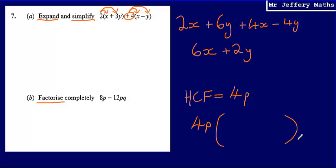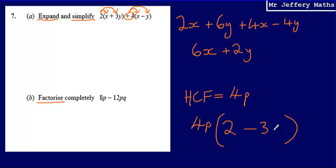That 4p goes on the outside of the brackets. To factorize is to take an expression and put it back into brackets. I need to work out what to multiply 4p by: 4p multiplied by 2 gives me 8p. Then 4p multiplied by what gives me negative 12pq? I multiply by negative 3q — positive 4 times a negative gives the negative, 4 times 3 gives 12, and p times q gives pq. So the final answer for part b is 4p bracket 2 minus 3q.